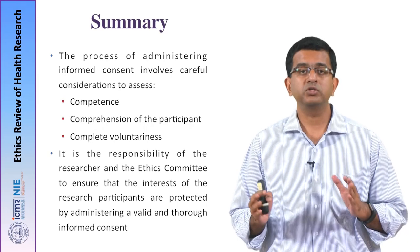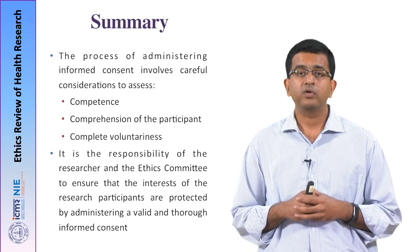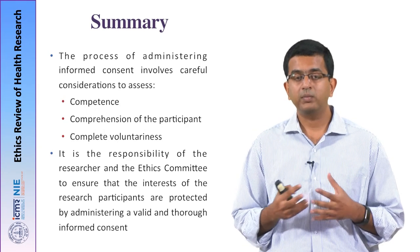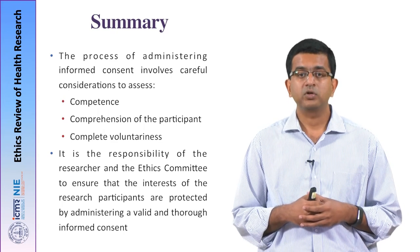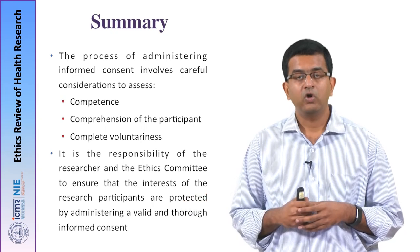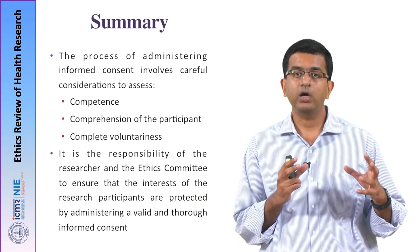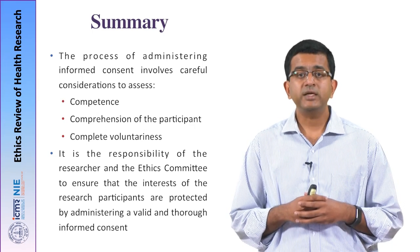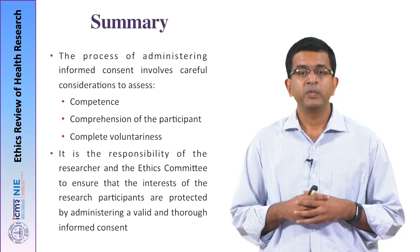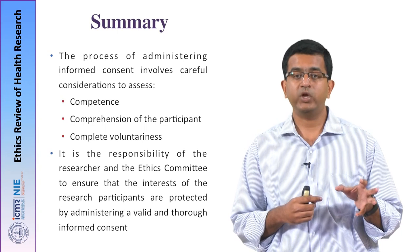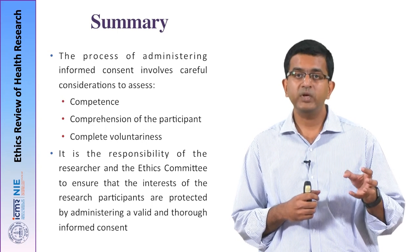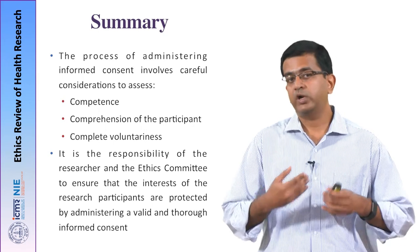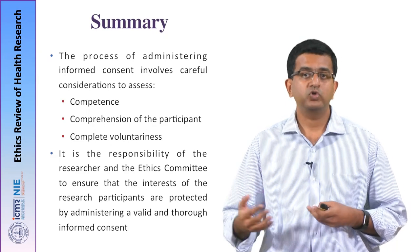Quickly summarizing the process of informed consent: the process of administering an informed consent involves careful consideration of three aspects. You can remember them as the 3 Cs — competence, comprehension, and complete voluntariness. All three have to be present for an informed consent process to be considered appropriate and complete. It is the responsibility of the researcher and the ethics committee to ensure that the interests of the research participants are protected. Therefore, the informed consent form has to be in the spirit of protection of the interest of the research participant, and not in the spirit of protecting the researcher against future litigations. Thank you.